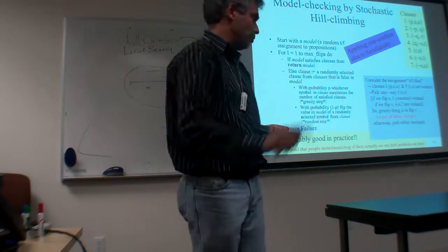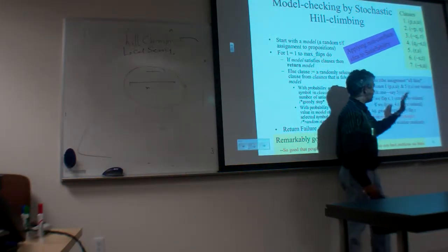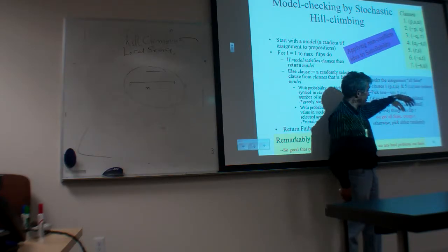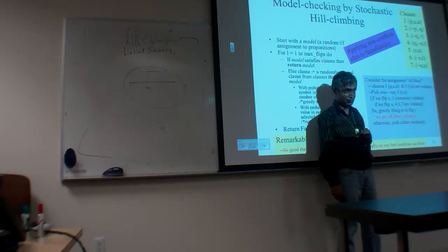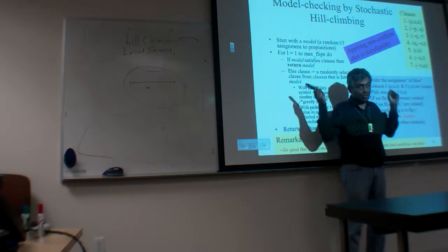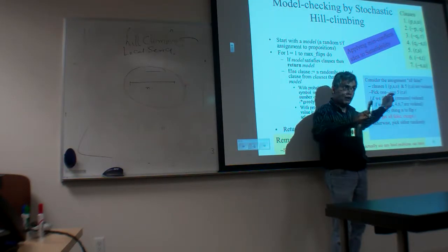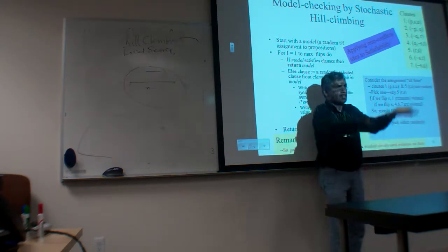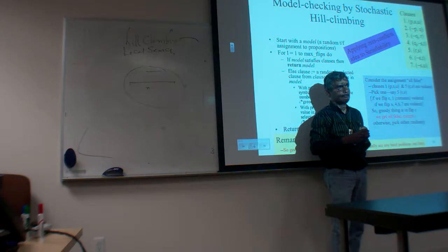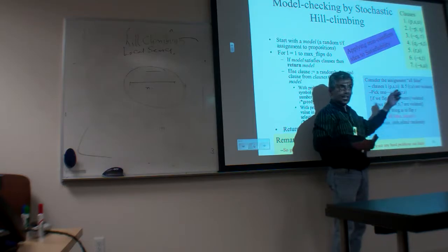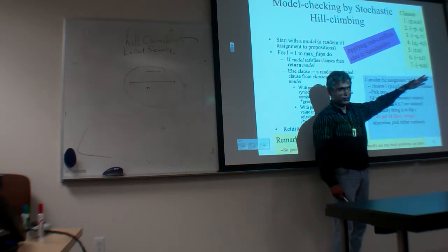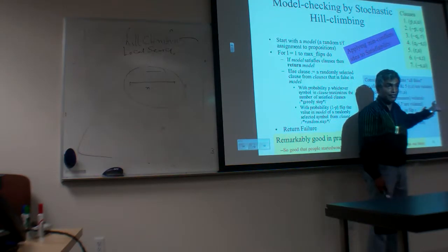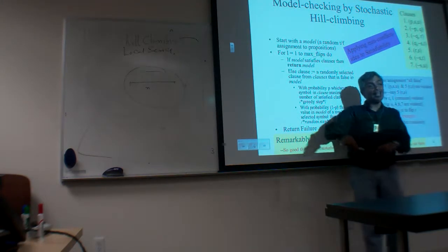My idea essentially: I will pick an assignment; if it satisfies all clauses, done. If not, pick one of the violated clauses, pick one of the variables in it, and flip. The choice of which variable to flip is based on whose flipping leads to the least number of violated clauses — that's the elevation in the hill climbing metaphor. Commit to the one that leads to the best improvement. Then check if the new assignment satisfies everything. If not, play this game again. That is greedy hill climbing search.